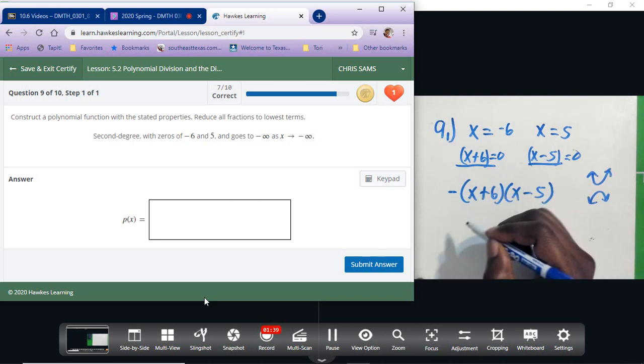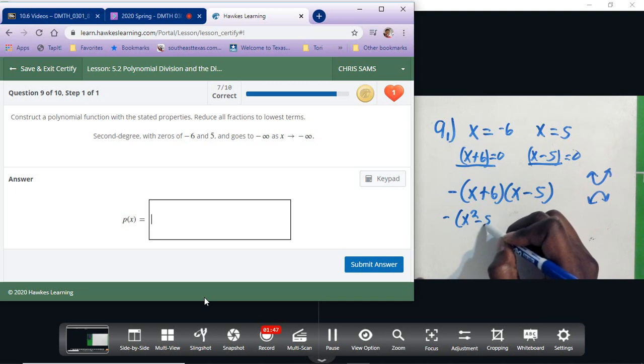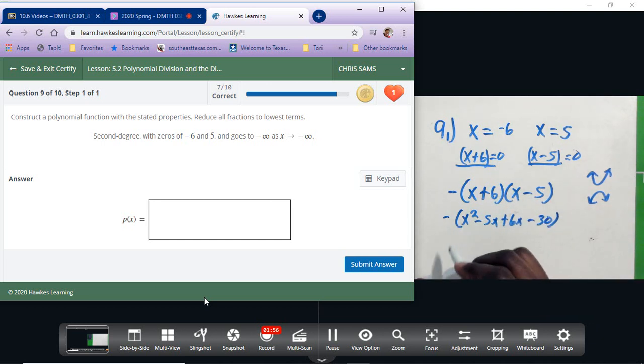That will give me x squared minus five x plus six x minus thirty. And then simplifying one step further, we have x squared plus x minus thirty. So this form could be good, or we can just distribute out the negative.